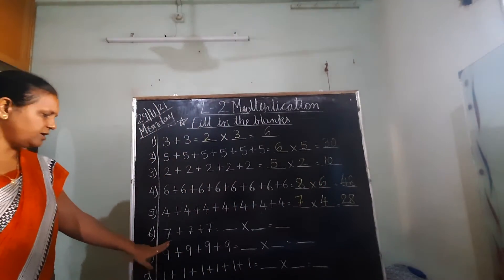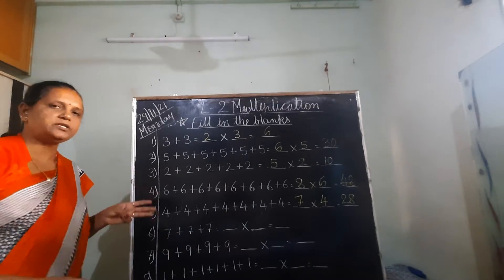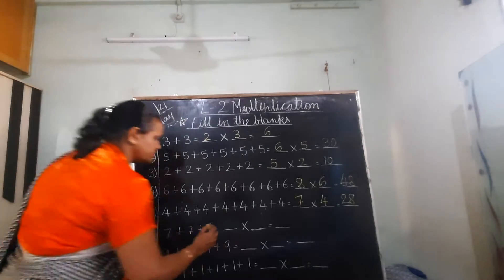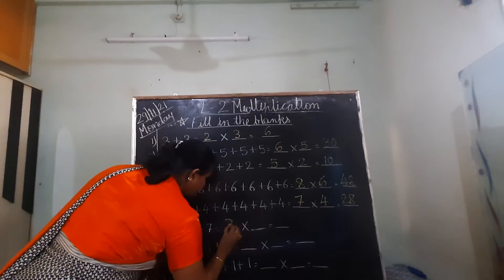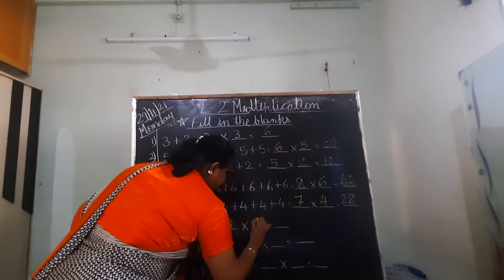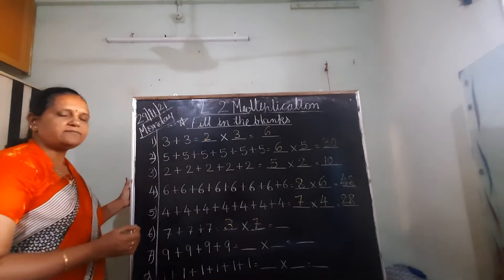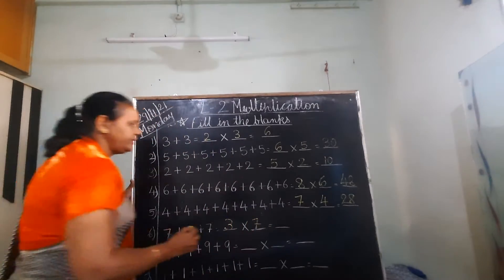7 — 1, 2, 3. 7 is repeated 3 times. So write down 3 here. And 7 — 3 7's are 21.